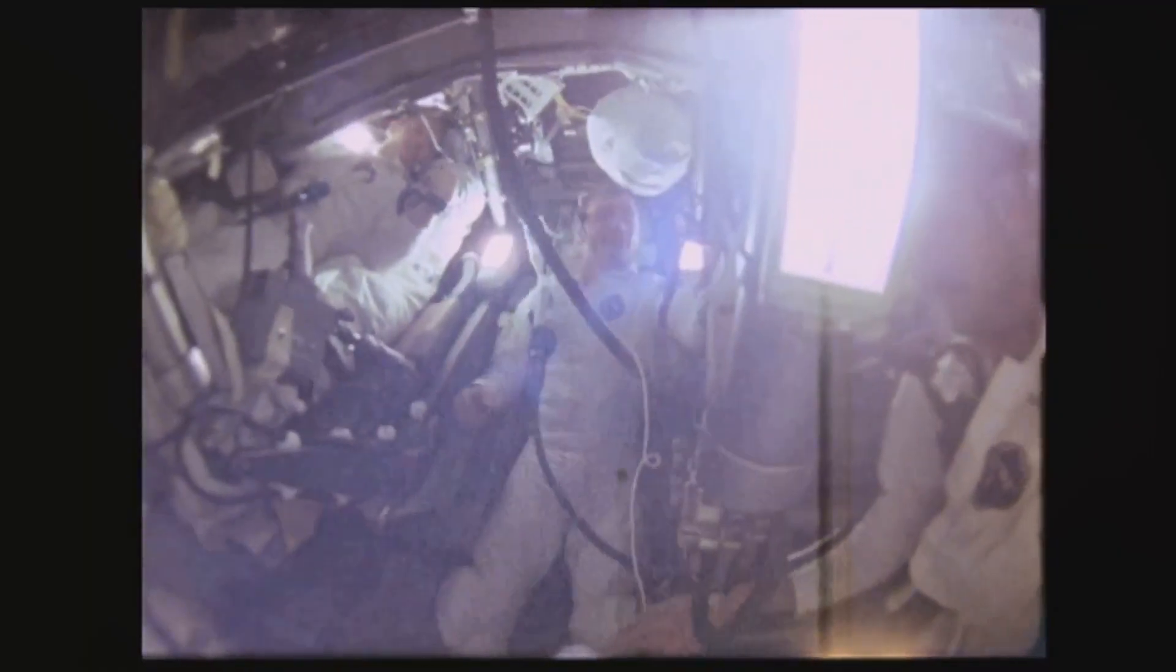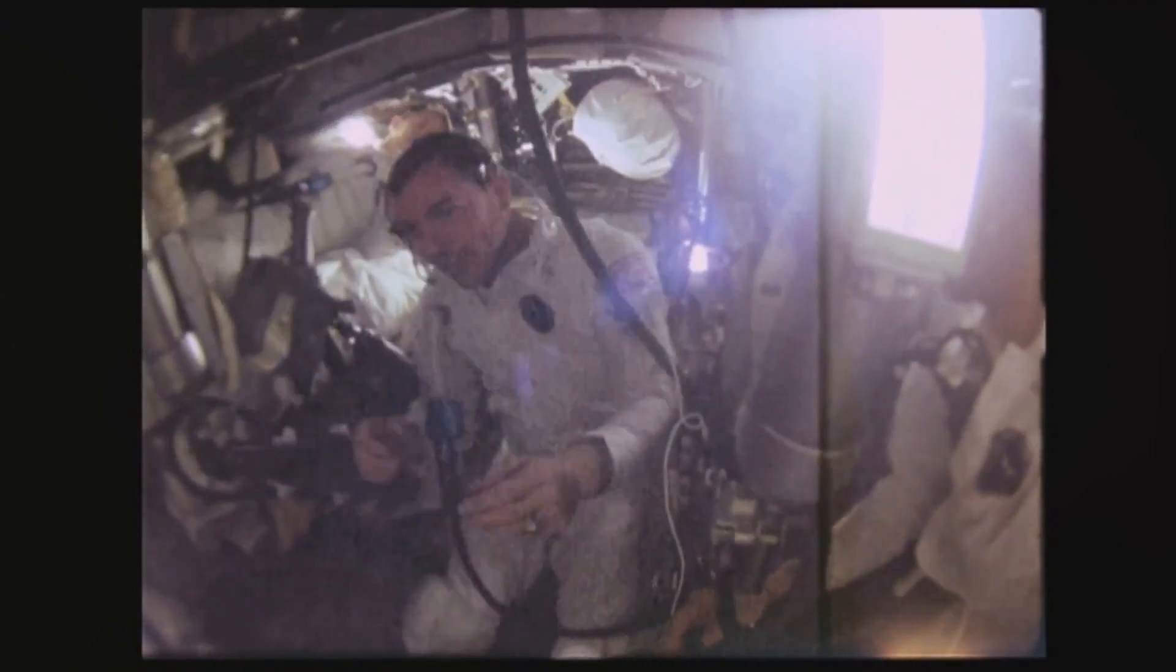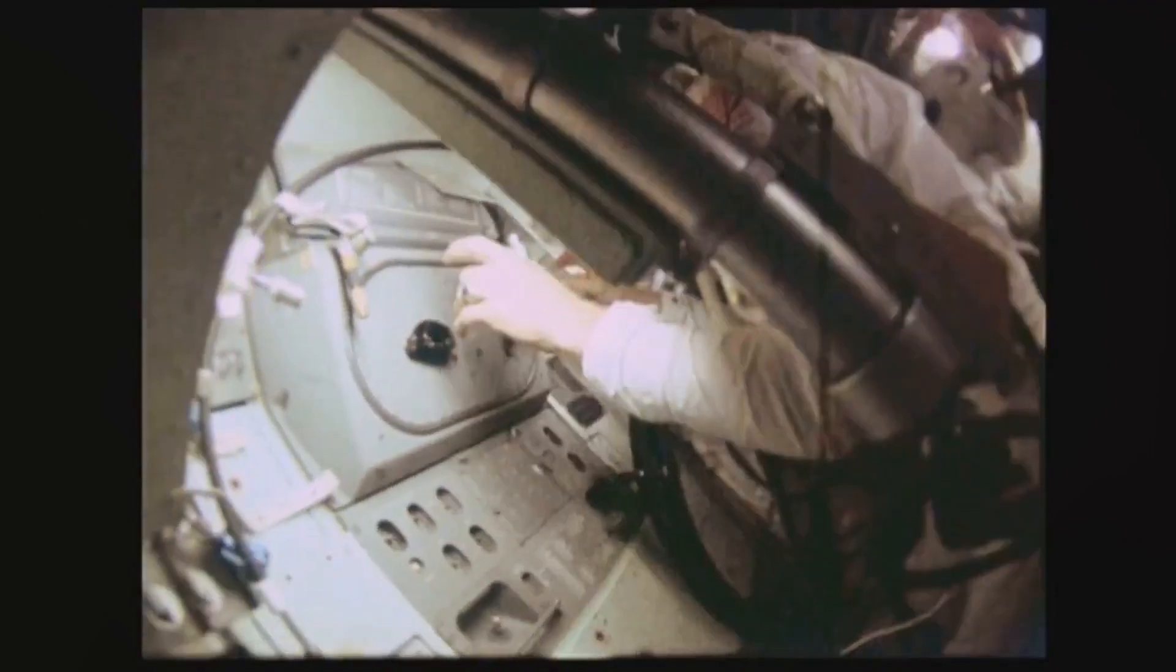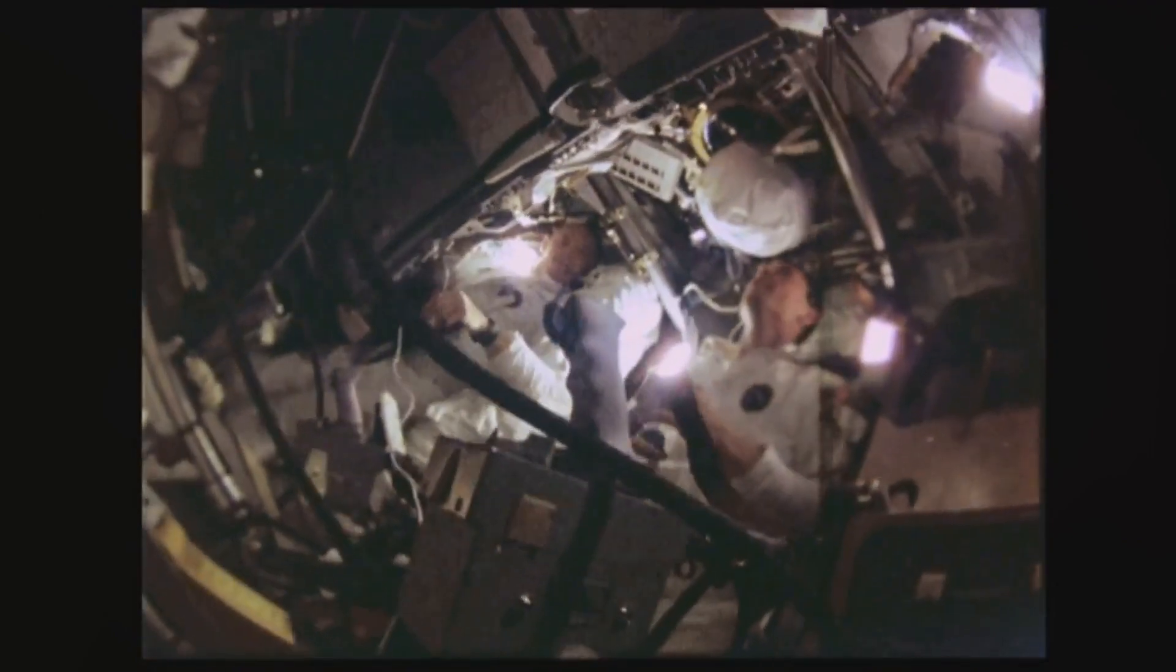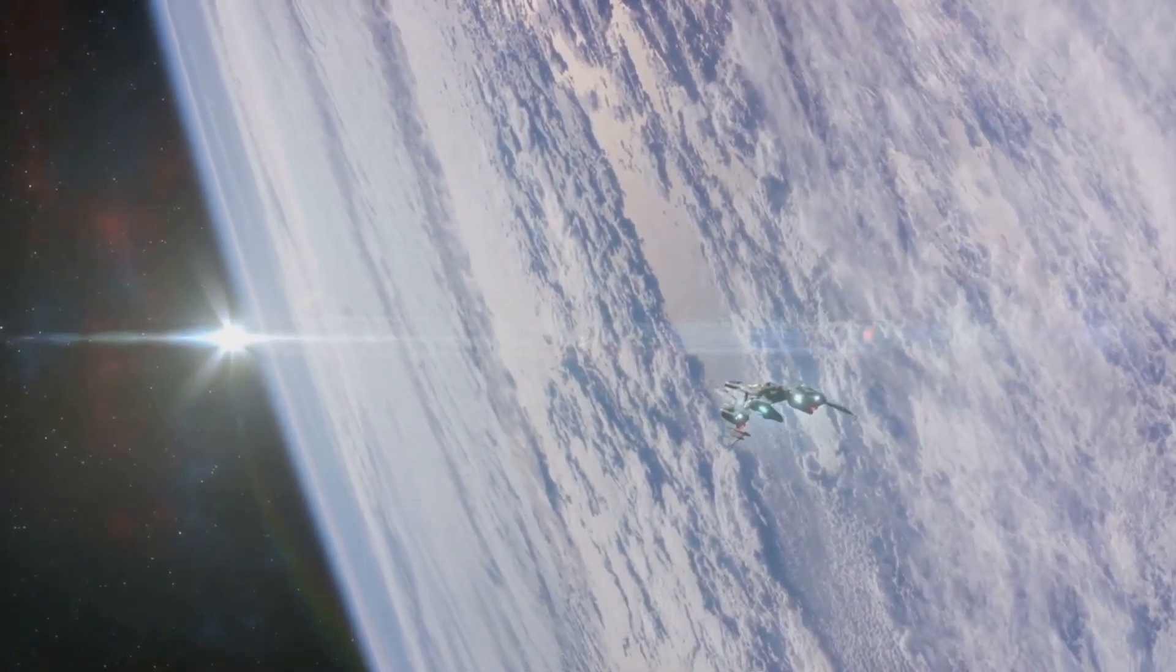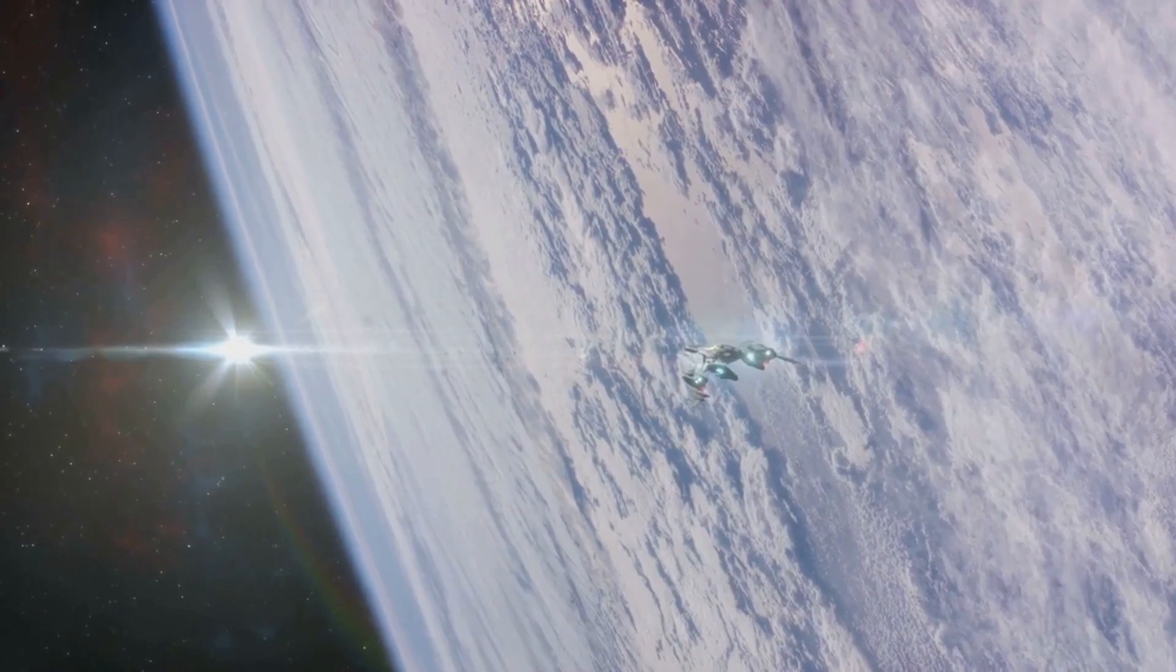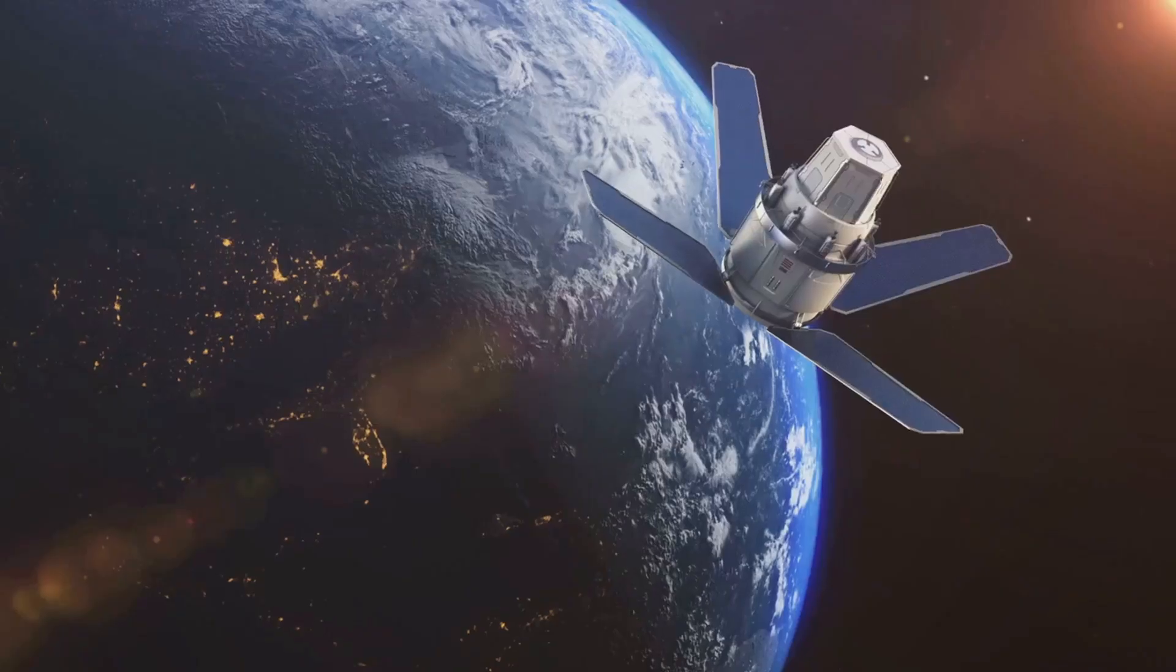One was kept on Earth while the other was sent into space aboard a high-speed rocket. When the space-bound clock returned to Earth, it was compared with the stationary one. What they found was astonishing. The clock that had been on the rocket was slightly behind the one that stayed on Earth. Time, it seems, had slowed down for the clock in space, thus providing the first empirical evidence of time dilation.